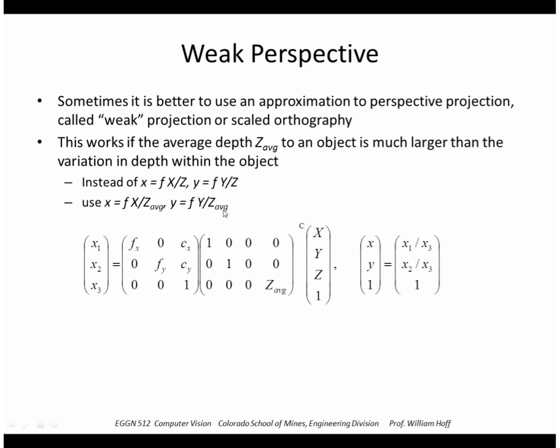So in the matrix multiplication, instead of using a 1 here and a 0 here, we use a 0 here and the z average here. So essentially, this wipes out this z entirely and uses the z average. So the benefit of this is that the image coordinates are a linear combination, a linear function of the 3D coordinates x and y.